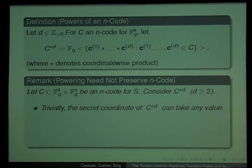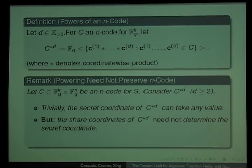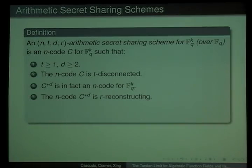We would like to talk about the privacy or disconnection and reconstruction in this power of the code. But the problem is that this is not always an n-code, because even though if C is an n-code, then the power satisfies this first property that we can share any secret, what is not always satisfied is that the set of all shares determine the secret. So the powering is kind of a destructive process.